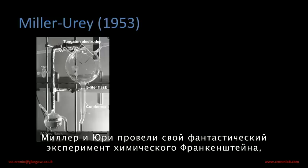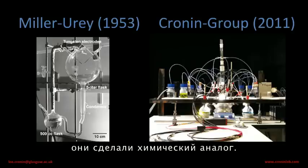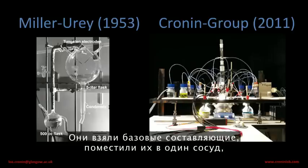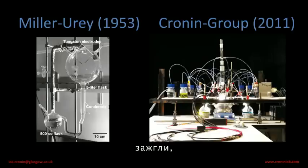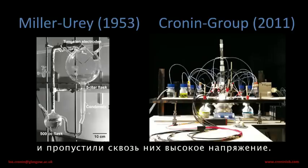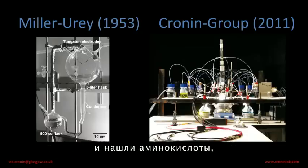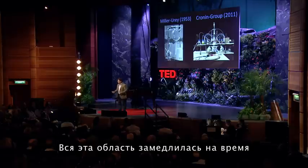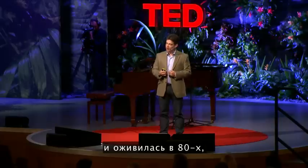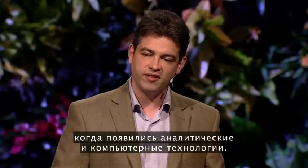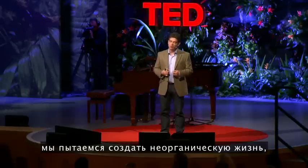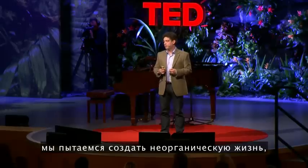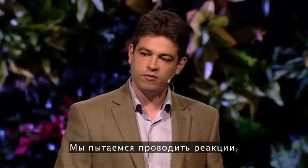In the 1950s, Miller and Urey did their fantastic chemical Frankenstein experiment. They took the basic ingredients, put them in a single jar, ignited them, and put a lot of voltage through. They had a look at what was in the soup and they found amino acids. But nothing came out — there was no cell. So the whole area has been stuck for a while, and it got reignited in the 80s when analytical technologies and computer technologies were coming on.